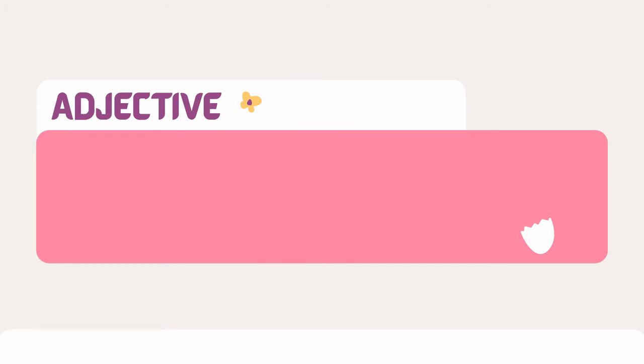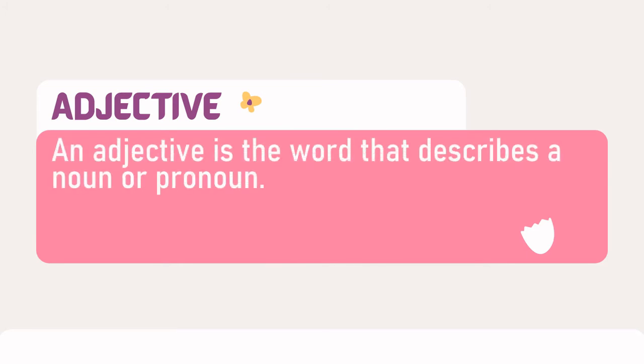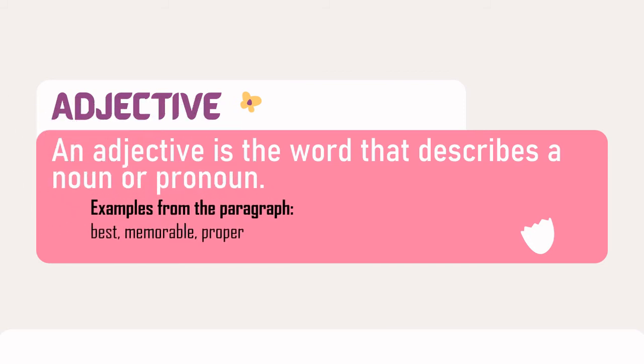Adjective. An adjective is a word that describes a noun or pronoun. Examples are: best, memorable, and proper.